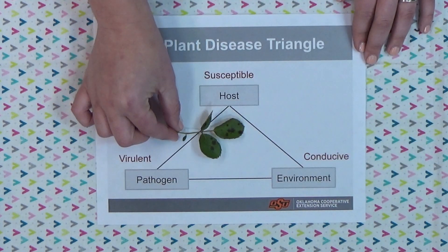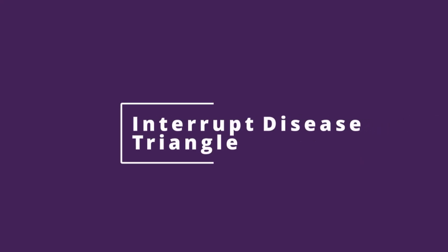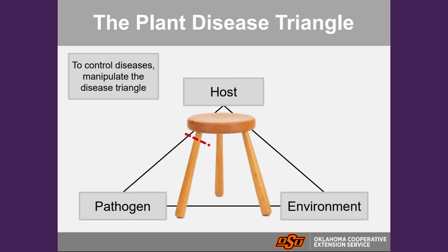I've got some disease right here. A good way to think about control when it comes to diseases is interrupting this plant disease triangle. Think of it like a three-legged stool — a three-legged stool only stands if it has three legs. You cut off one of those legs and that stool no longer stands up. That's how the plant disease triangle works; we have to have all of these components in order for there to be disease.